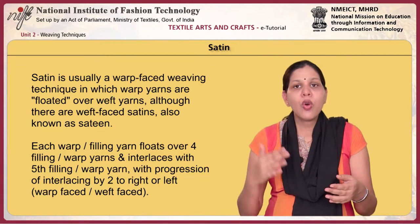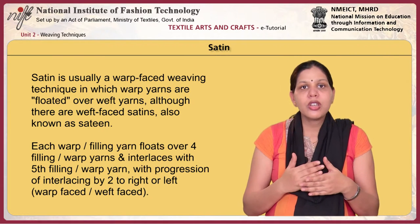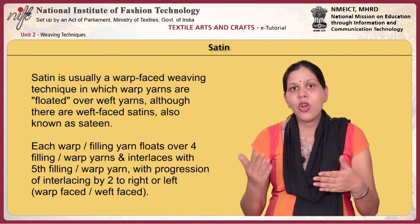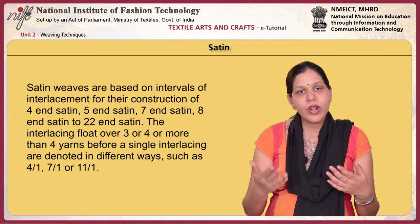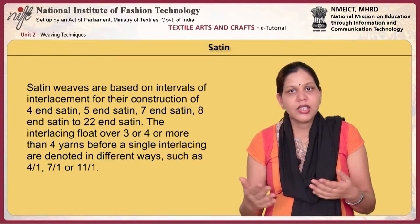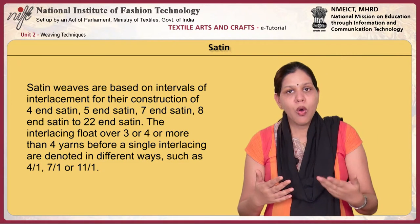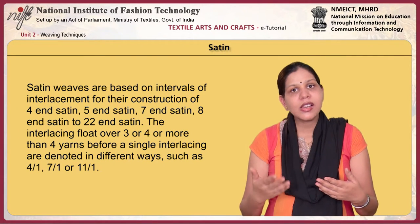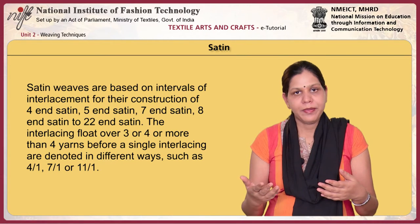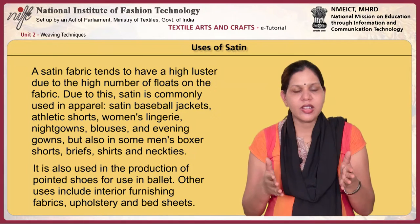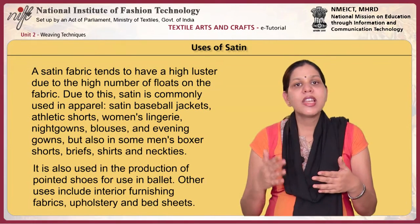Each warp or filling yarn floats over 4 filling or warp yarns and interlaces with the 5th filling or warp yarn, with a progression of interlacings by 2 to the right or left. Satin weaves are based on intervals of interlacement for their construction: 4-end satin, 5-end satin, 7-end satin, 8-end satin and 22-end satin. The interlacing floats over 3, 4 or more than 4 yarns before a single interlacing, denoted by 4x1, 7x1 or 11x1. A satin fabric tends to have high luster due to the high number of floats, so satin is commonly used in apparel.